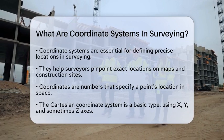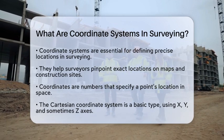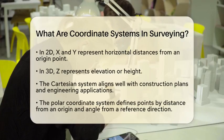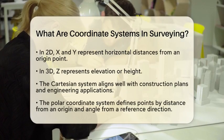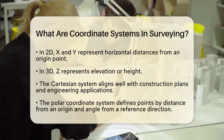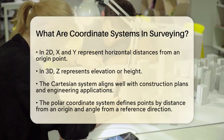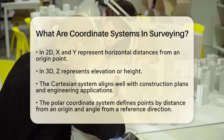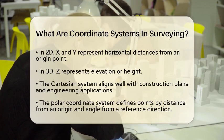One of the most basic types is the Cartesian coordinate system. This system uses two or three perpendicular axes, typically labeled X, Y, and sometimes Z, to define a point's position. In two dimensions, X and Y represent horizontal distances from a reference point known as the origin. When working in three dimensions, Z represents elevation or height. This system is widely used in construction and engineering because it aligns well with how many plans are drawn.